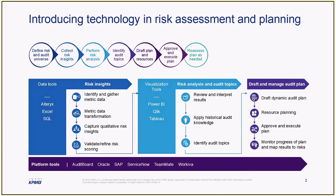What technology is at your disposal? What technologies exist within the organization, and how can they be leveraged by internal audit? Also, what types of technology should the department leverage? We see options and tools that can be leveraged whether you have a platform tool or not. The first set of tools is used to aggregate and transform organizational data and develop the risk scoring across comparable attributes or defined thresholds and tolerance levels.